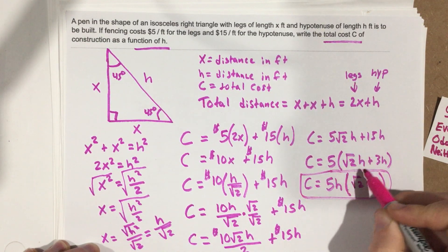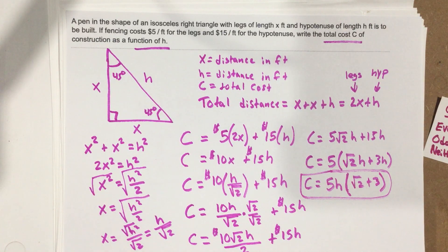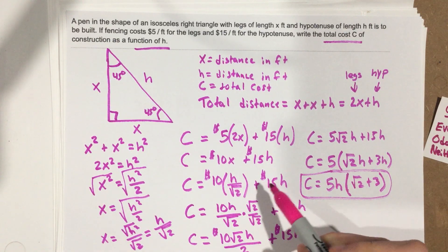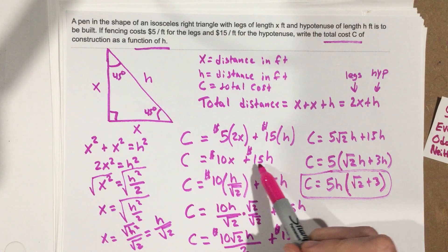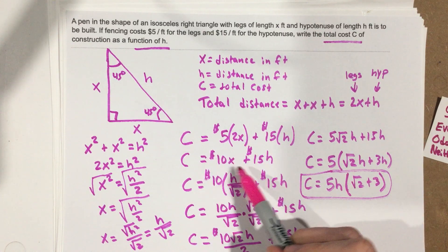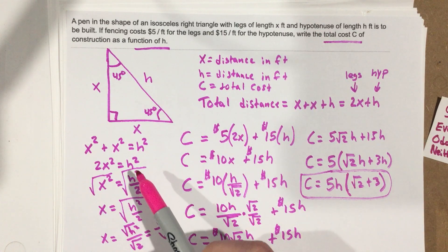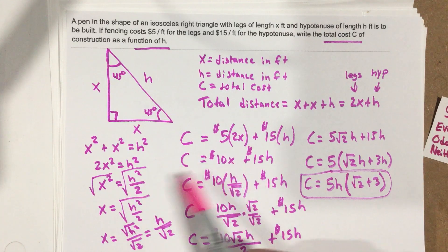So any of these versions would probably be just fine. The actual part of getting to C equals 10X plus 15H, that was a pretty easy part. After that, you have to write an expression for X in terms of H, so you can replace it in there. And the last part was just rationalize the denominator.